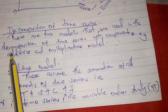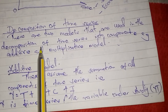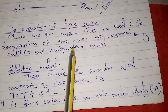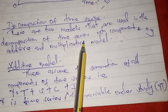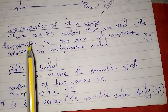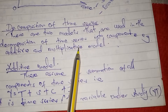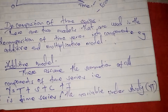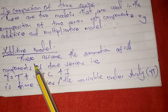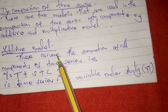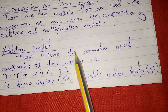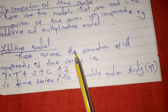Additive comes from the word adding, multiplicative comes from the word multiplication. So we have the additive and the multiplicative model. First we shall look at the additive model. These assume the summation of all the components of time series.